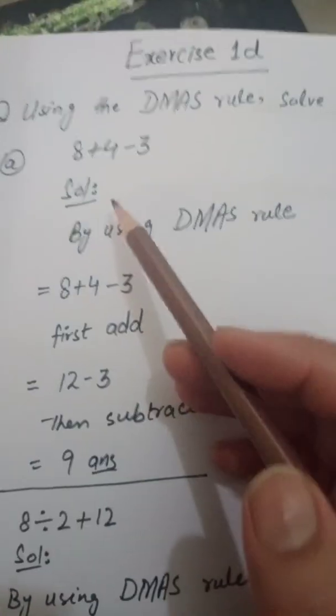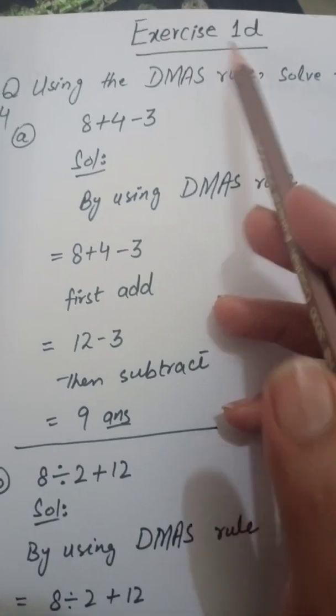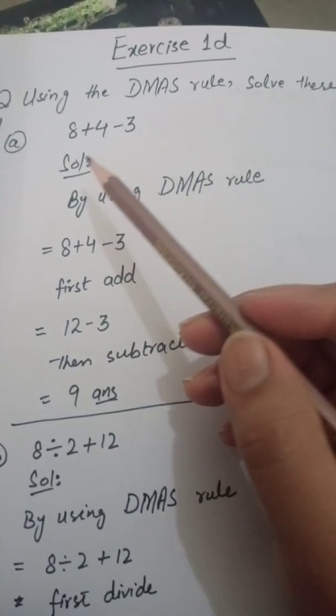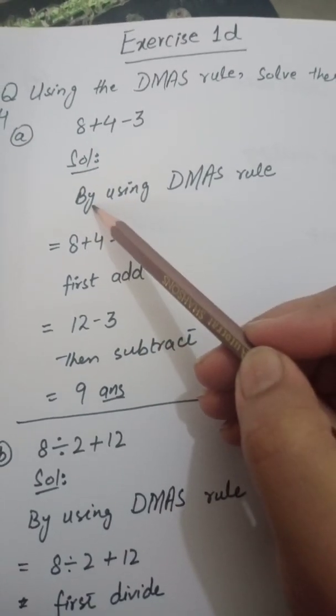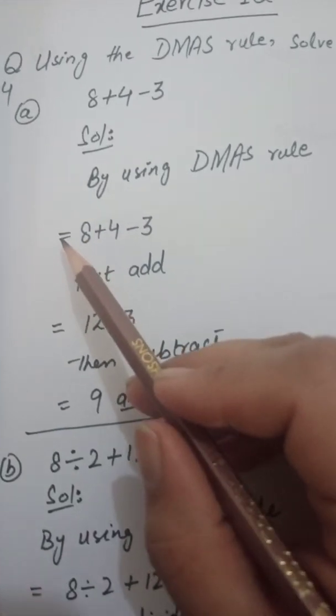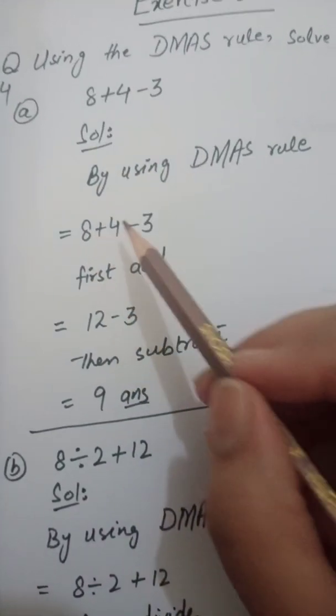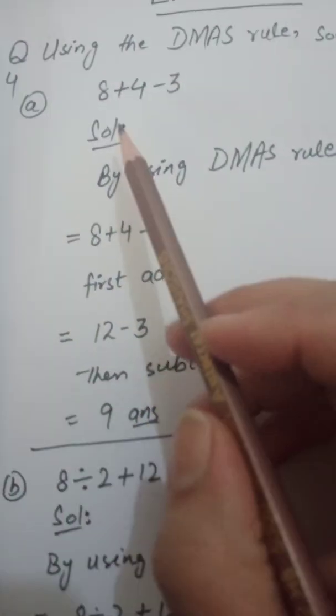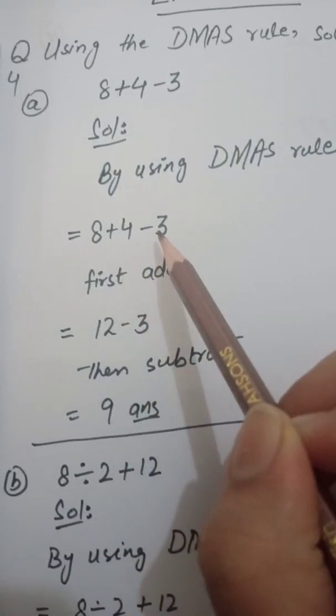Okay, so part number A, students, you have to write the exercise heading, question number 4, and in the solution the first step will be by using DMAS rule, and after that the second step will be with equality sign, you have to rewrite the question. Okay, now see students, in this question we have 8 plus 4 minus 3.